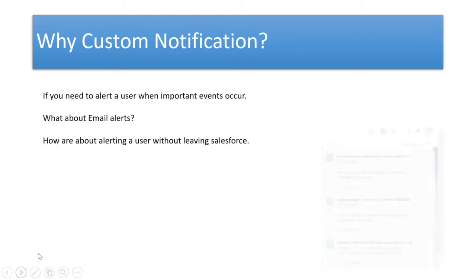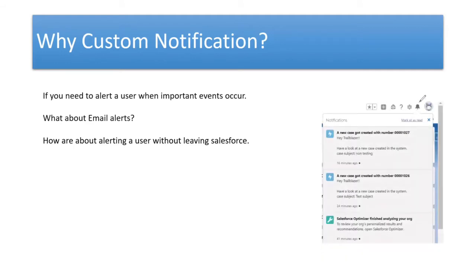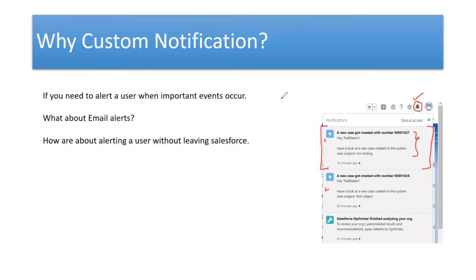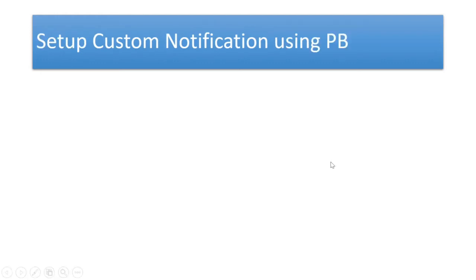What exactly does a custom notification do? You may have seen the notification bell symbol in the Lightning Experience. Instead of sending an email alert, we can design a custom notification where the user can be notified about the alert without leaving Salesforce. They can review the important event right within Salesforce. Here is a simple screenshot example of how a notification would look. In this video, we'll see how to build this custom notification, test it, and see exactly how it appears for the user.